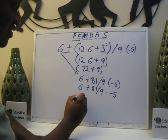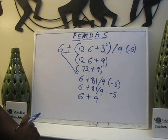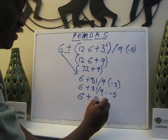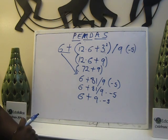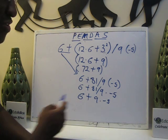So it's going to be 6 plus 9. 81 divided by 9 is 9 times negative 5. We have addition and multiplication, so we must do the multiplication first.